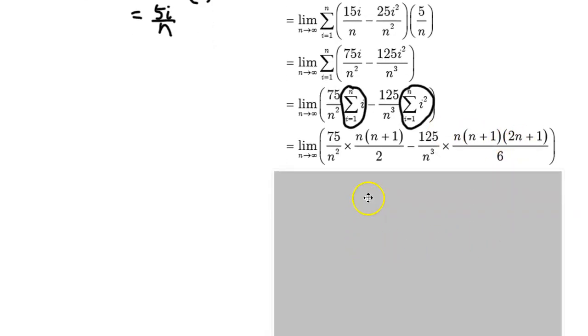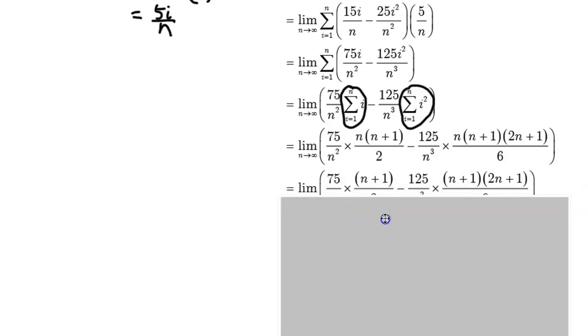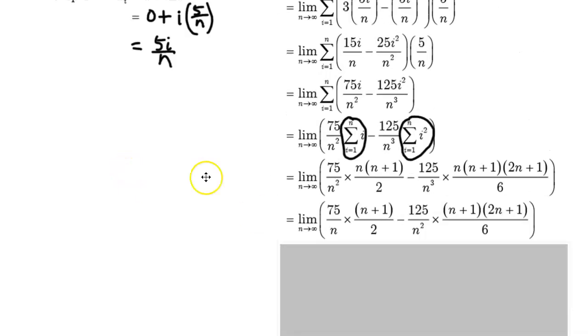Again, this is looking kind of like it's getting out of control here, but we're going to start simplifying. So in this step, what we have is I cancelled out an n right here with this n down here, so that's why I have 75 over n instead of 75 over n squared. And since this n was cancelled out, I have (n+1) over 2. Same thing over here with the second term. I cancel out one of those n's, which leaves me with n squared, and that n goes away, and we end up with this expression right here.